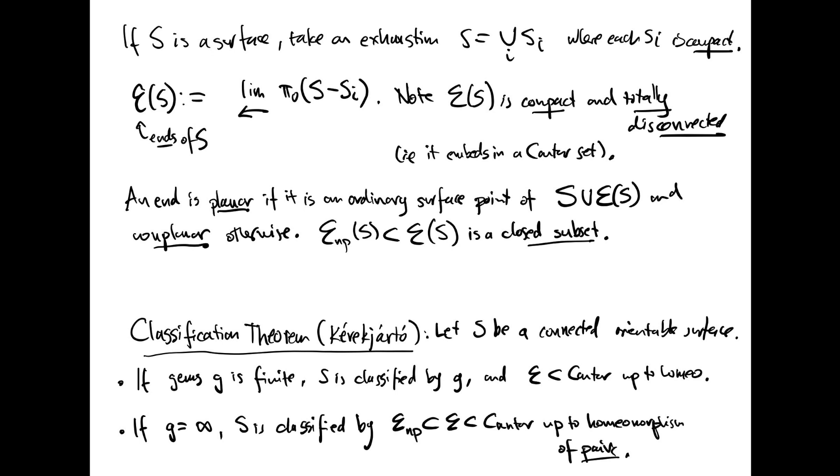Since it's compact and totally disconnected, it embeds in a Cantor set. There are two kinds of ends. There are the planar ends, those with the property that a neighborhood of that end in the surface is a planar surface, and those that are not planar, i.e., they're accumulated by genus. The non-planar ends we denote with a subscript NP. The set of non-planar ends is a closed subset of the set of all ends. Notice that we can add the collection of ends of S to the surface S itself to make a compact topological space. The planar ends are exactly the surface points, the ordinary surface points, in S union the space of ends. The non-surface points are the non-planar ends.